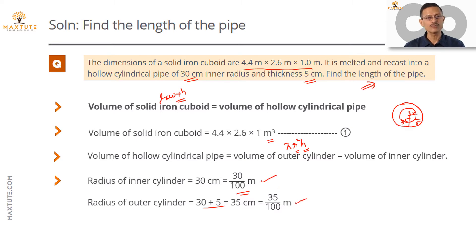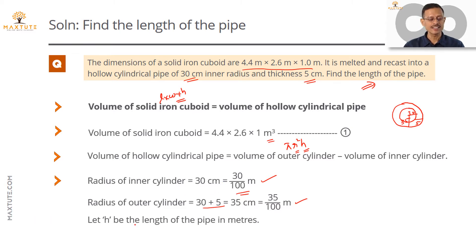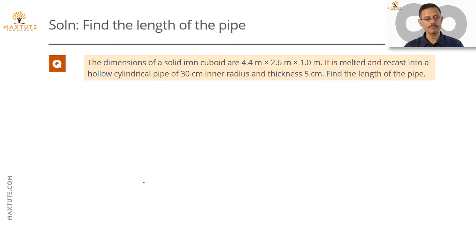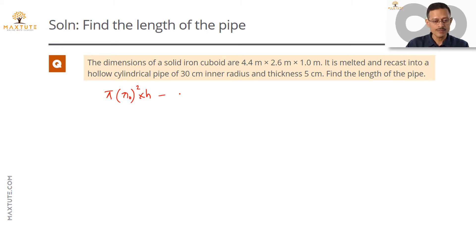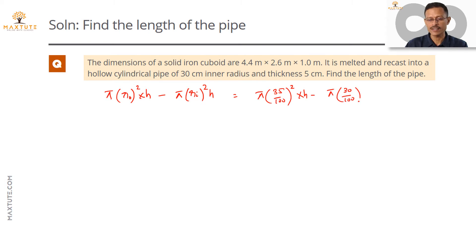Let's assign the variable h meters for the length of the pipe, which is the height of the cylinder. The volume of the cylindrical pipe is π × (r_o)² × h minus π × (r_i)² × h. Substituting, this becomes π × (35/100)² × h minus π × (30/100)² × h. Taking 100² and h as common factors gives π × h × (35² − 30²) / 10,000. The numbers actually cancel out quite beautifully toward the end.